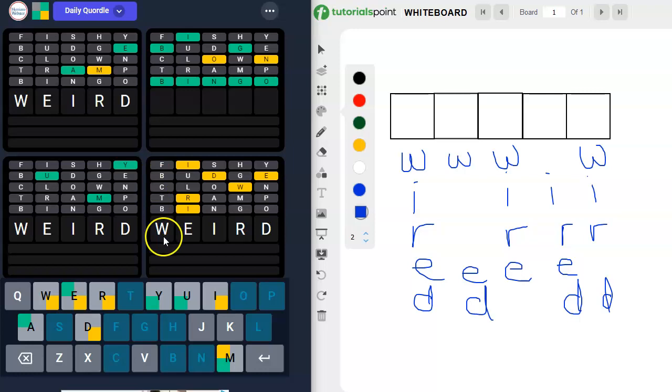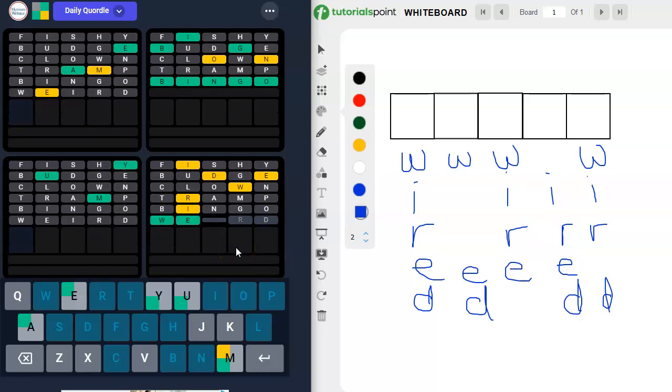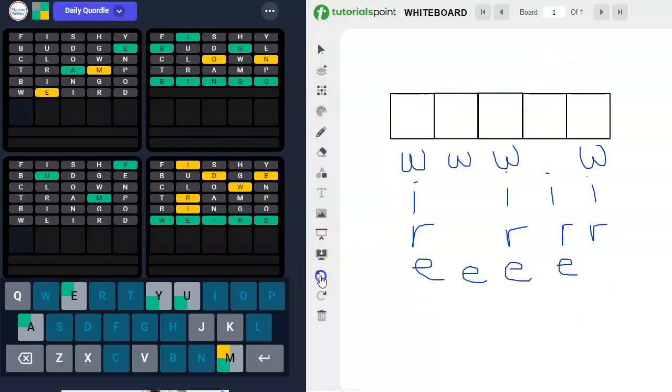Let's double check. The W can go here. The E can go here. The I can go here. The R can go here. The D can go here. Weird. Didn't help us much over there. All right, let's clean up because I'm going to need this for everything else I have to do today.